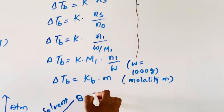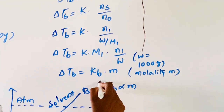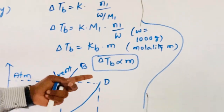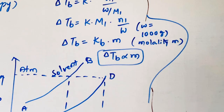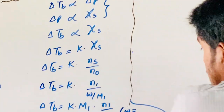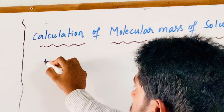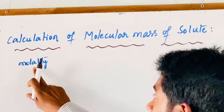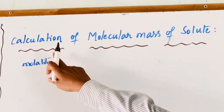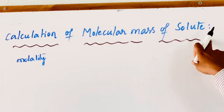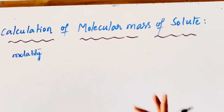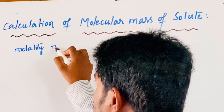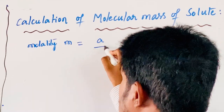From this relation, we get delta Tb is directly proportional to M (molality). What is the purpose of molality? It is used in the calculation of molecular mass of solute. The solute is non-volatile. While calculating molality: A by M, where A represents weight of solute and M represents molecular weight of solute.